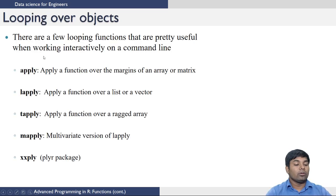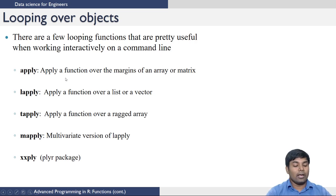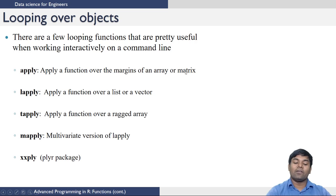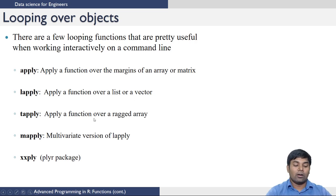Now we move on to looping over objects. There are a few looping functions that are very useful when working interactively on a command line. The apply function applies a function over the margins of an array or matrix. The lapply function applies a function over a list or a vector. The tapply function applies a function over a ragged array, and mapply is a multivariate version of lapply. We will see examples for each in the coming slides.